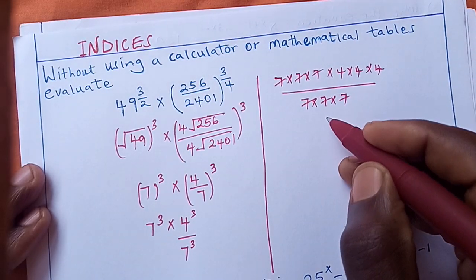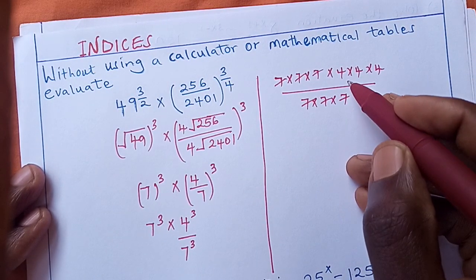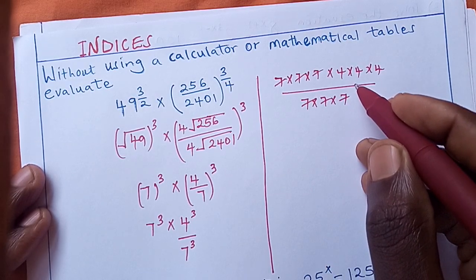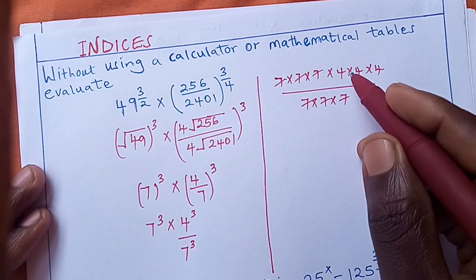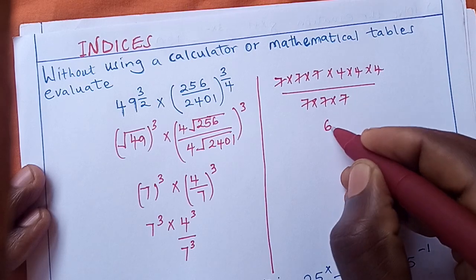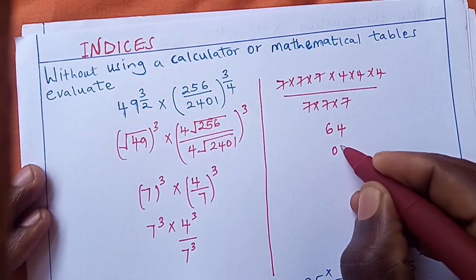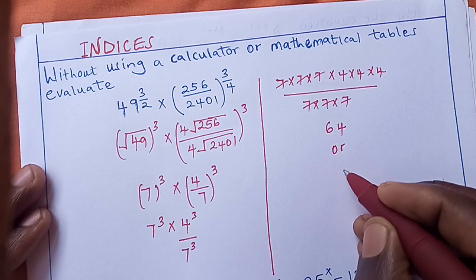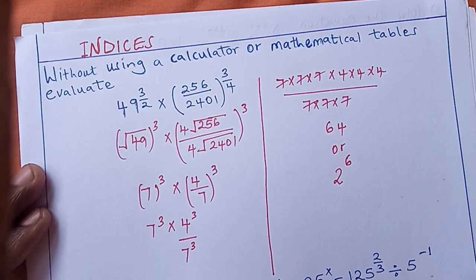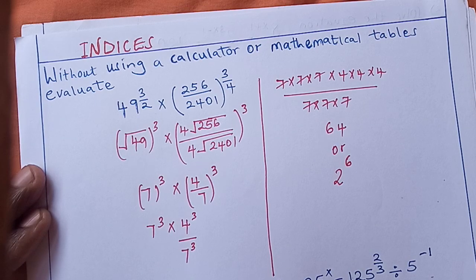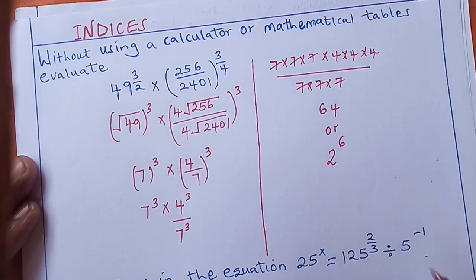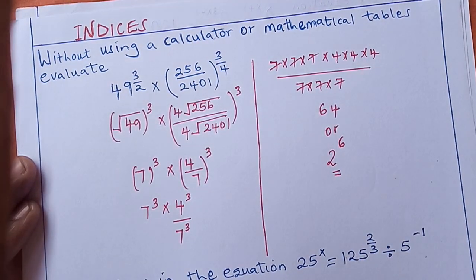We can expand this as 7 × 7 × 7 times 4 × 4 × 4, divided by 7 × 7 × 7. All the sevens cancel, leaving us with the fours as our numerator. 4 × 4 × 4 gives us 64, so the answer is 64, which we can also write as 2 raised to power 6 using prime factors.